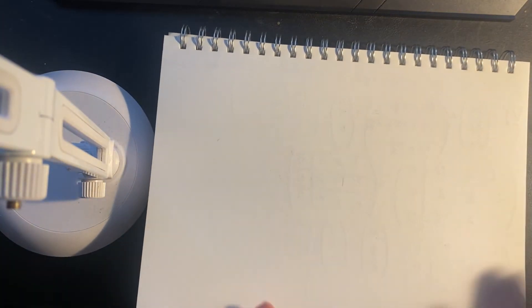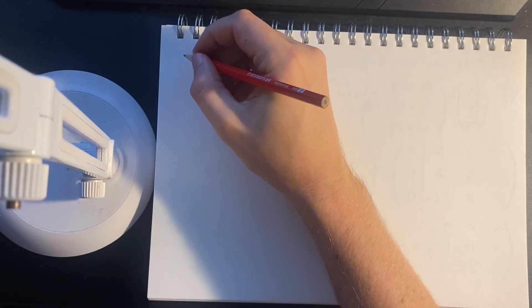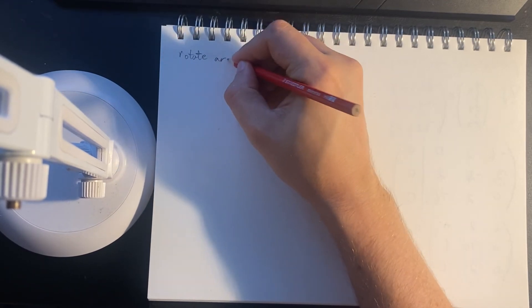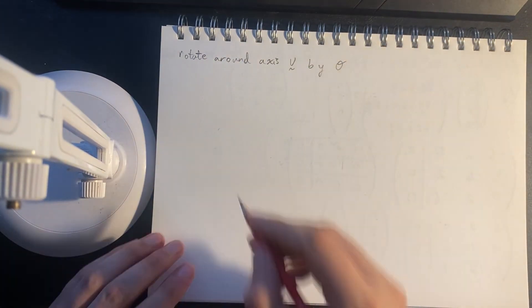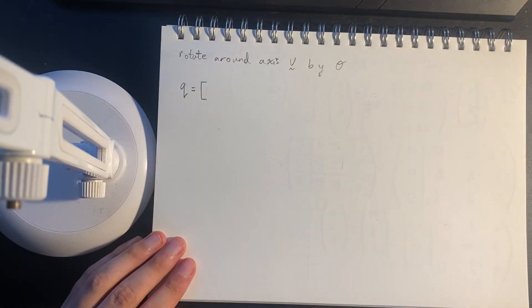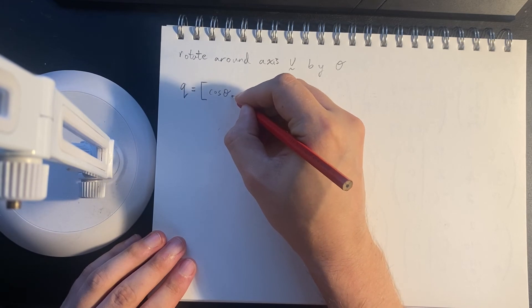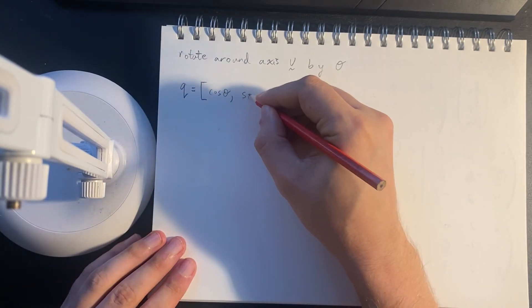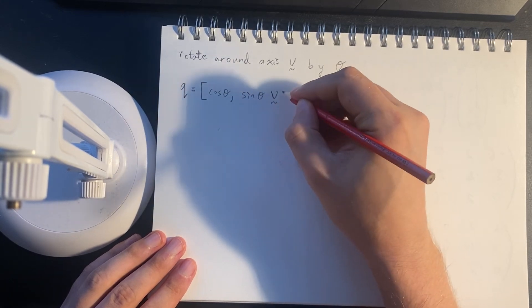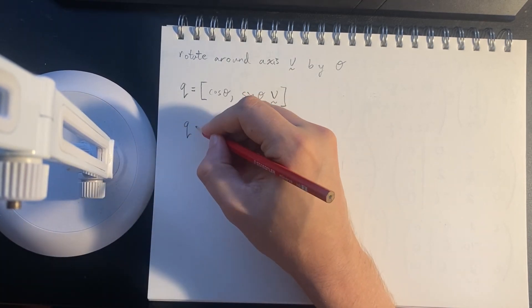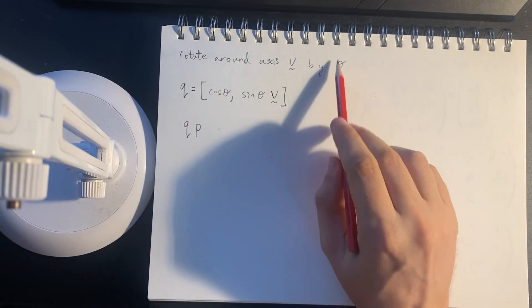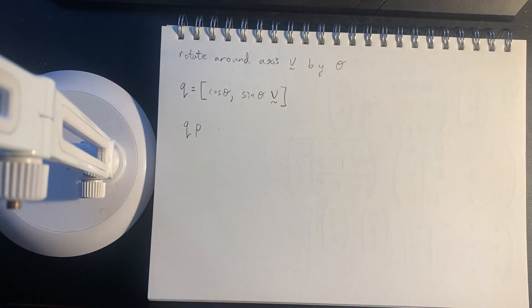So a naive approach would be to say, okay, well, let's try, if we want to rotate around some axis, which we'll call v, by some angle θ. A completely reasonable first approach would be to take cosine θ as the real component, and then sine θ times that axis of rotation. But it turns out that, yes, this does, so if we take q and apply it to p, this does rotate it around by the axis of θ, but then it also modifies the, it modifies the length, the norm of that point, which isn't so good.